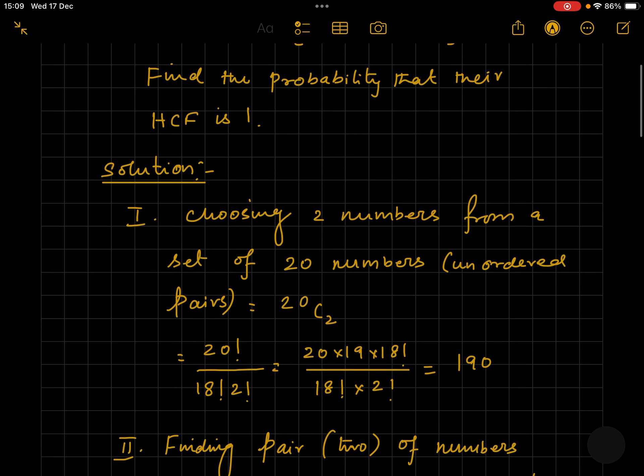Now let's go to the solution. Choosing two numbers from a set of 20 numbers, which are unordered pairs, that can be any pair. So we have the total outcome as 20C2, which is equal to 190.